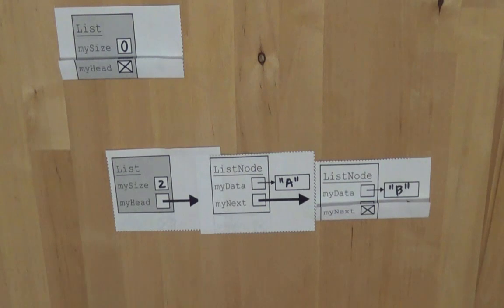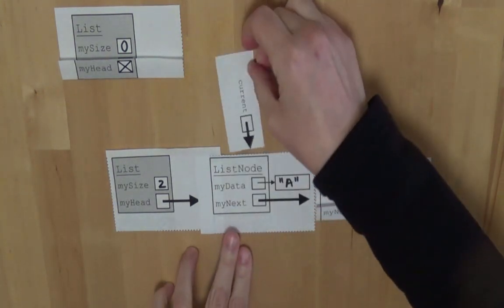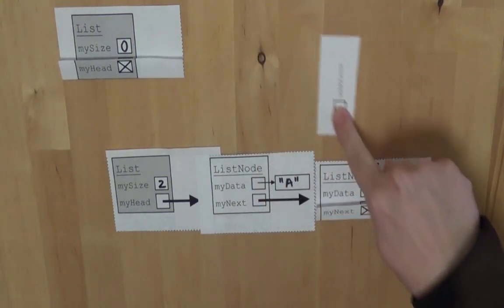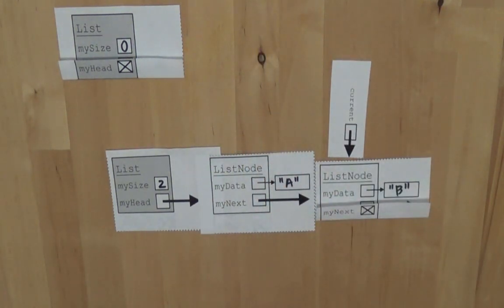And then when we're writing code for this, we can use that variable. Here is the variable current, and you can imagine walking the variable current down my list nodes.